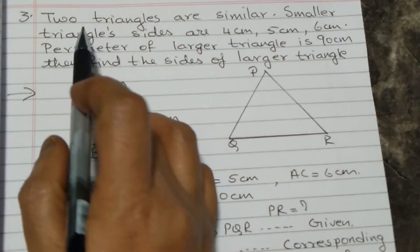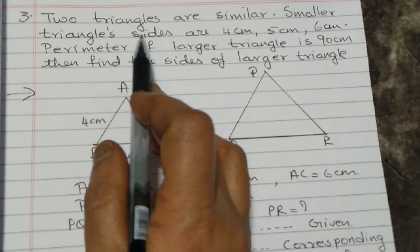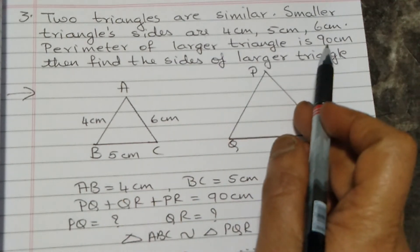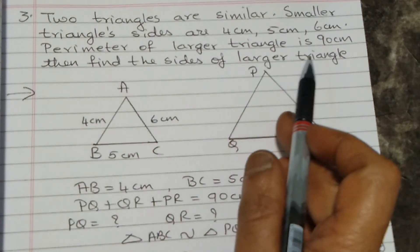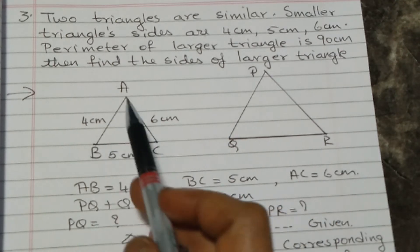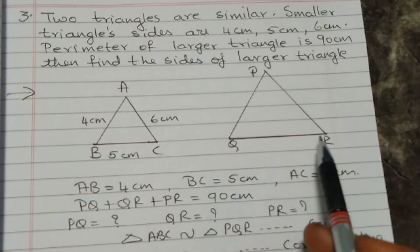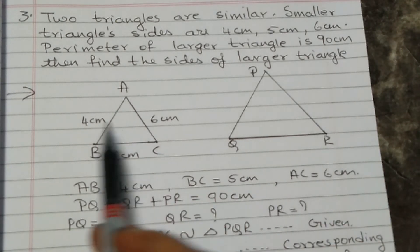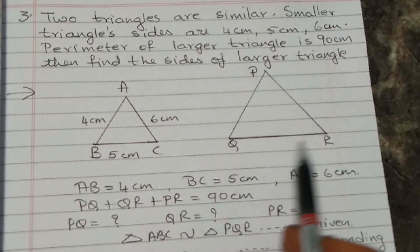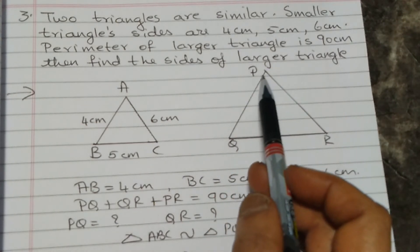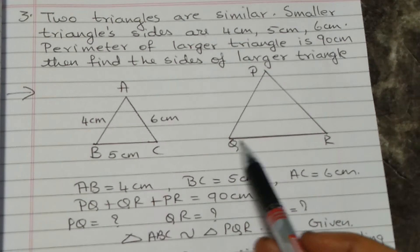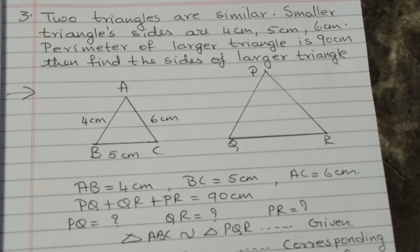Question number 4, sum number 3: two triangles are similar. The smaller triangle's sides are 4 cm, 5 cm, and 6 cm. The perimeter of the larger triangle is 90 cm. Find the sides of the larger triangle. Let the smaller triangle be ABC and the larger triangle be PQR. AB = 4 cm, BC = 5 cm, AC = 6 cm, and PQ + QR + PR = 90 cm.